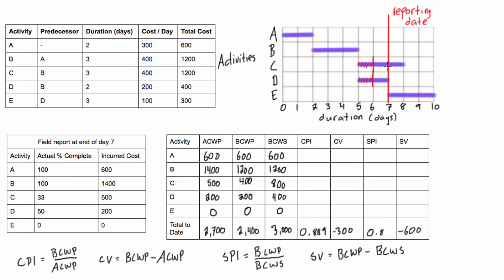A negative schedule variance indicates the project is behind schedule. You can see this visually on the Gantt chart — we expected the second and third days of activity C to be done, and all of activity D to be done, but those haven't been completed. In summary, our project is both over budget and behind schedule.